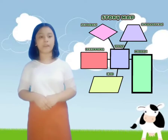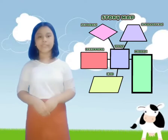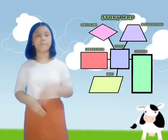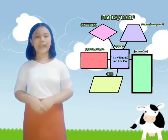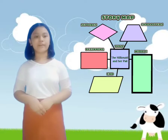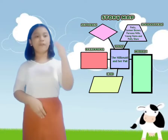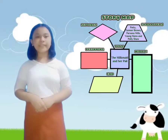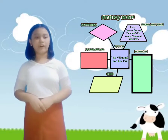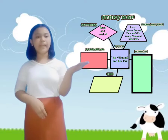Using different kinds of quadrilaterals, here is the story map to show the important parts of the story. The title of the story is The Milkmaid and Her Pail. The characters in the story are Patty, Farmer Brown, Parson's Wife, Young Men, and Polly Shaw. The settings in the story are on the farm and the market.